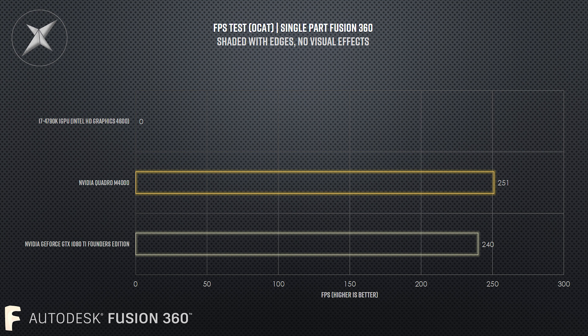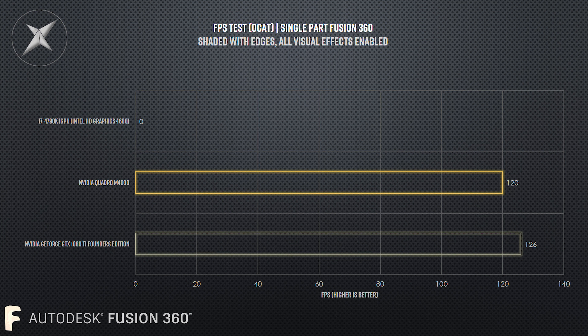Moving to the single part in Fusion 360, it was a bit smoother with the IGPU, but I still couldn't measure FPS and was getting graphics driver resets. As I mentioned earlier, I wasn't sure if that was a loose cable or a driver issue, but I wouldn't recommend using an IGPU with Fusion 360 anyway — purely because of the application downgrade from DX11 to DX9. For the final test, single part with all visual effects, dedicated GPUs were handling it well above 120 FPS, while the integrated graphics was still quite smooth but not something I'd recommend.